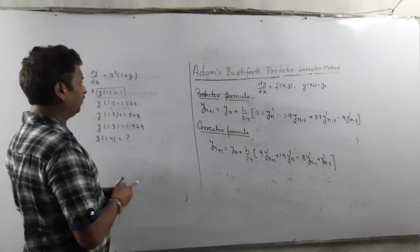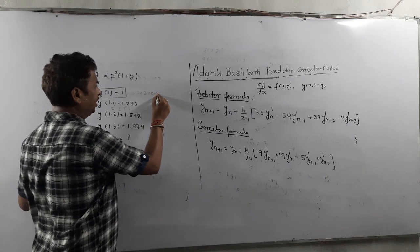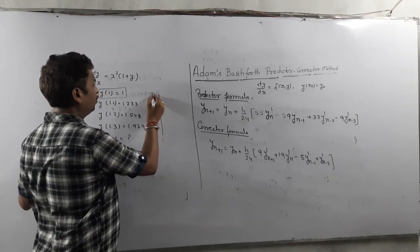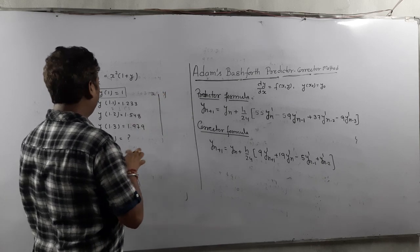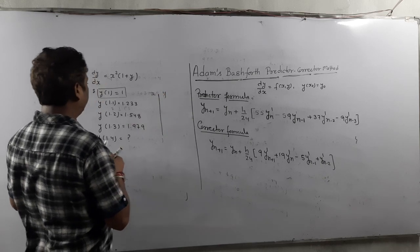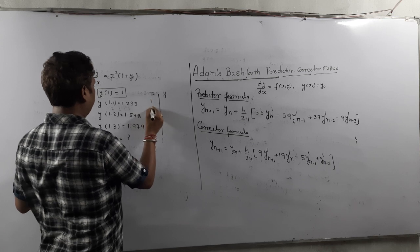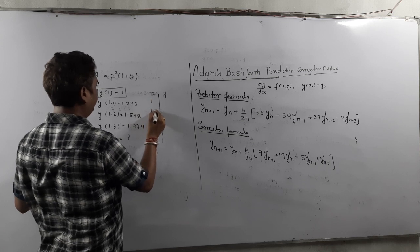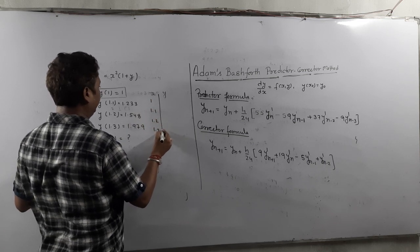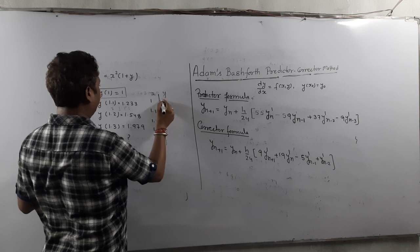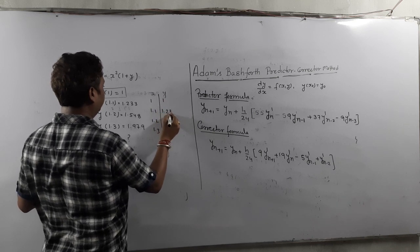Once you have these values, it is very simple. Just make a table with x values and corresponding y values. The x values are 1, 1.1, 1.2, 1.3, and the corresponding y values are 1, 1.233, 1.548, and 1.979.